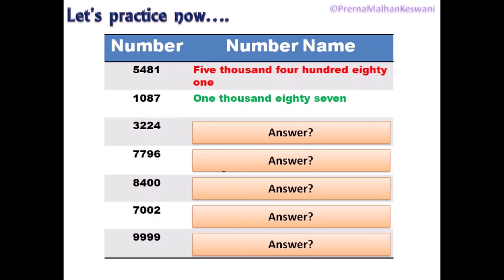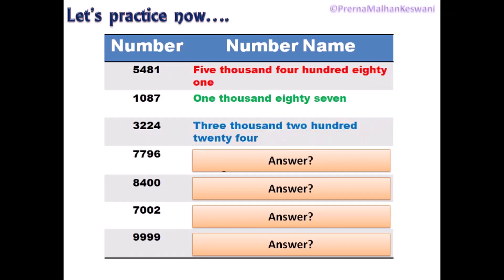Next is 3,224. 3 is in the 1000s place, 2 is in the 100s place, and then 24. So three thousand two hundred and twenty-four is the correct answer. Next: 7,796. So seven thousand seven hundred and ninety-six.